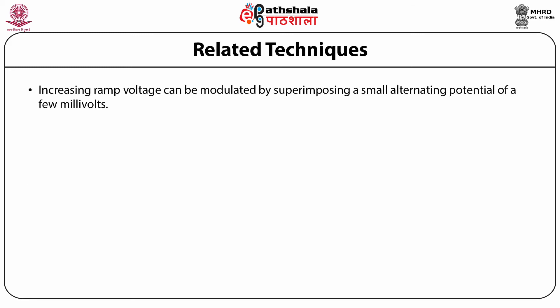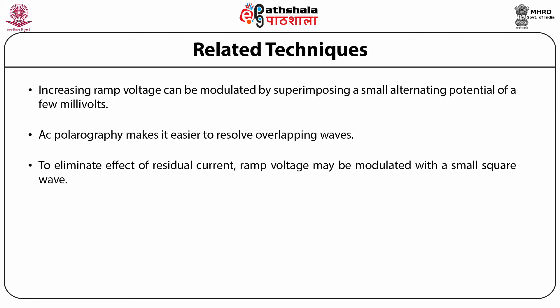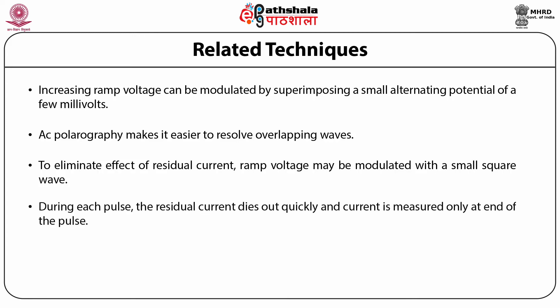The slowly increasing ramp voltage can be modulated by superimposing a small alternating potential of a few millivolts. This leads to an AC component of the current that reaches a maximum at the half-wave potential. AC polarography makes it easier to resolve overlapping waves. In order to eliminate the effect of the residual current, the ramp voltage may be modulated with a small square wave. During each pulse, the residual current dies out quickly and the current is measured only at the end of the pulse.